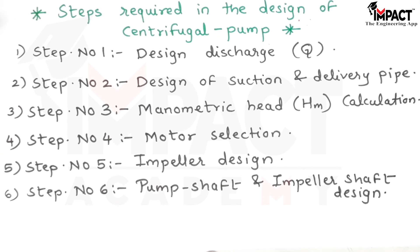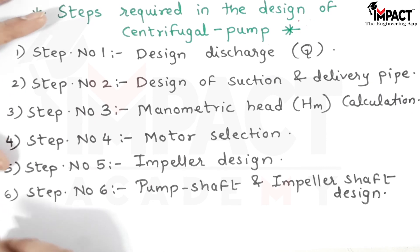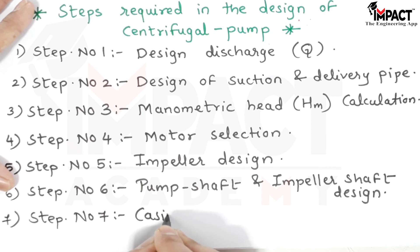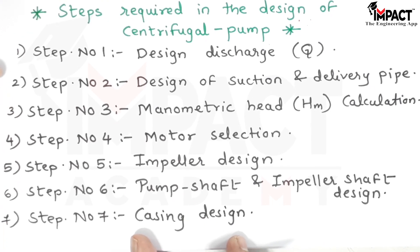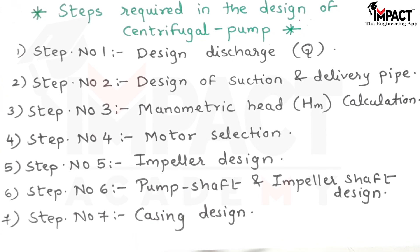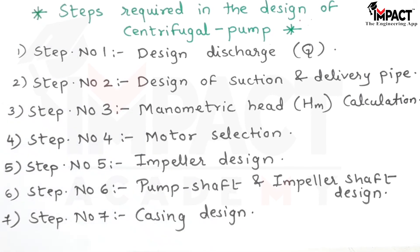Step six covers pump shaft and impeller shaft design — finding the diameters, lengths, and loads acting on these shafts. Step seven is the casing design, where we determine the type and dimensions of the casing for the centrifugal pump as well as the angles used inside the casing.